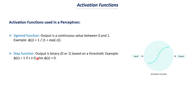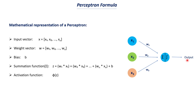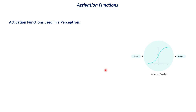Then we have the sign function. This also gives a binary output, but the values are either -1 or +1. It is similar to the step function: when z is greater than 0, the output is +1; if z is negative, the output is -1. So you can only have two possible output values from a neuron using this activation function. Using sigmoid gives an output between 0 and 1 (like a probability), the step function gives 0 or 1, and the sign function gives +1 or -1 depending on z.